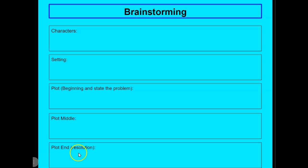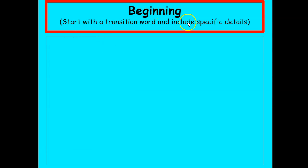Later on it says start with transition words and include specific details. Then you can start giving me more details at the beginning of your story, more details at the middle, and more details at the end.